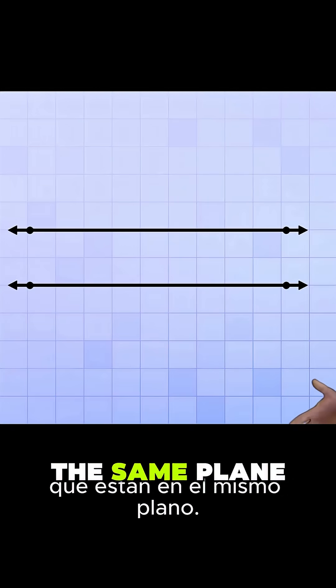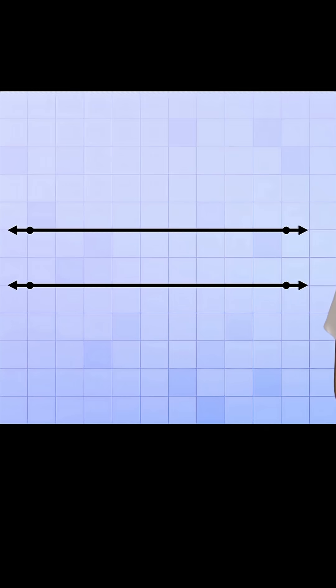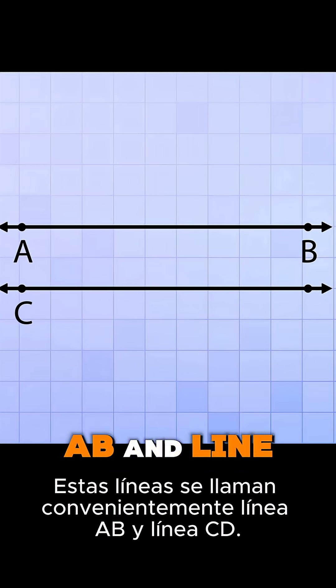Let's start with a couple of lines that are in the same plane. We're only going to be dealing with two-dimensional geometry in this video. These lines are conveniently called Line AB and Line CD.